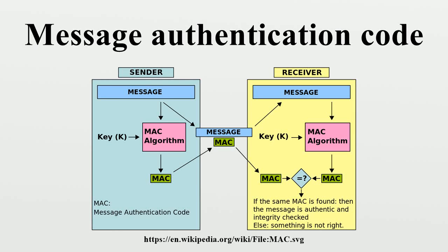In cryptography, a message authentication code is a short piece of information used to authenticate a message — in other words, to confirm that the message came from the stated sender and has not been changed in transit. A MAC algorithm, sometimes called a keyed hash function, accepts as input a secret key and an arbitrary length message to be authenticated, and outputs a MAC. The MAC value protects both a message's data integrity as well as its authenticity, by allowing verifiers to detect any changes to the message content.